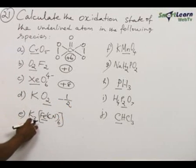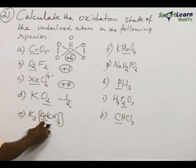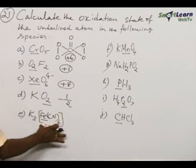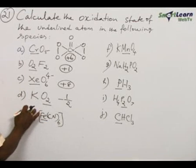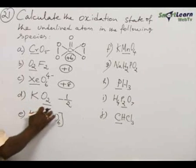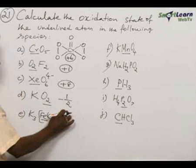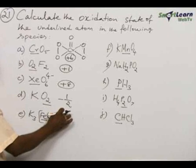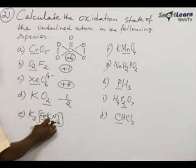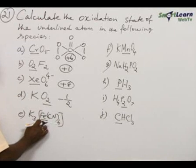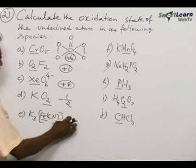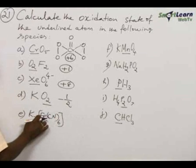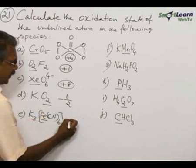The next compound is a complex compound: potassium ferricyanide. Outside the complex ion, potassium gives plus 3. So the entire complex ion is minus 3. Each cyanide ion is minus 1, so minus 6 plus X equals minus 3, giving Fe an oxidation state of plus 3.